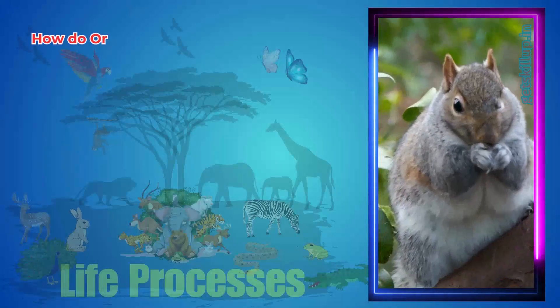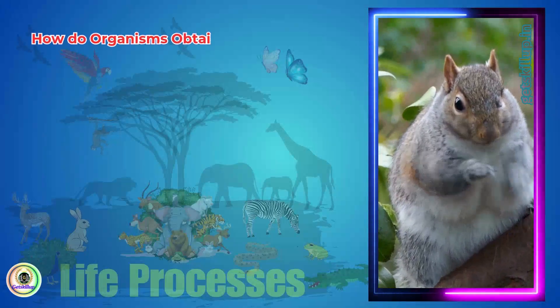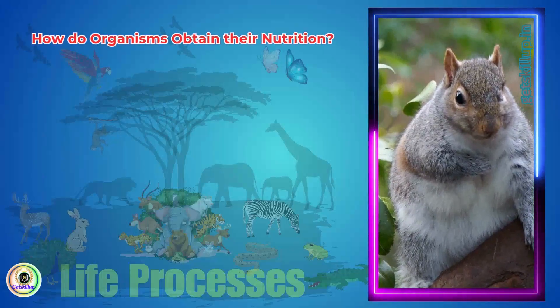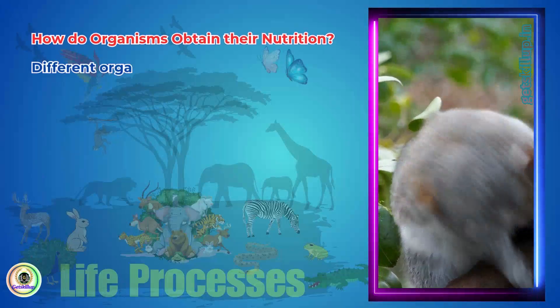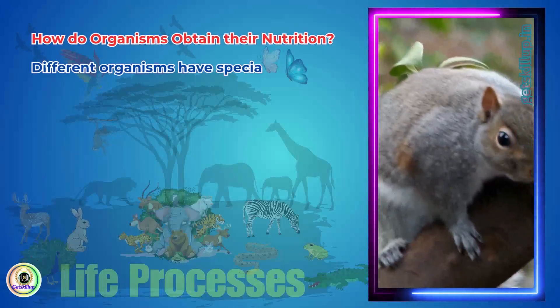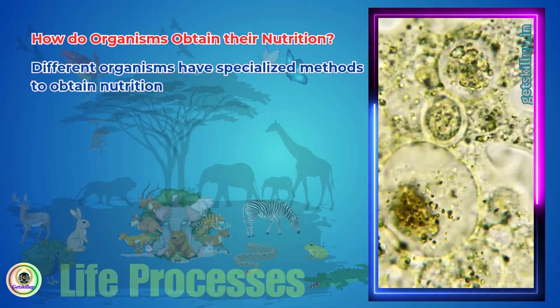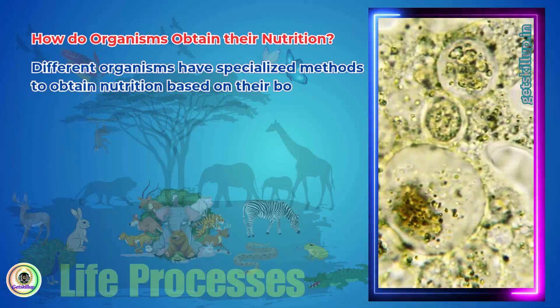How do organisms obtain their nutrition? Different organisms have specialized methods to obtain nutrition based on their body structure and environment. The way food is ingested and digested varies across species.